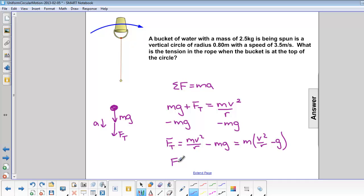Now we can plug in our numbers. m is 2.5 kilograms, v is 3.5 meters per second squared, divided by r which is 0.8 meters, minus g which is 9.8 meters per second squared. When we calculate that, the force of tension equals 13.8 newtons.